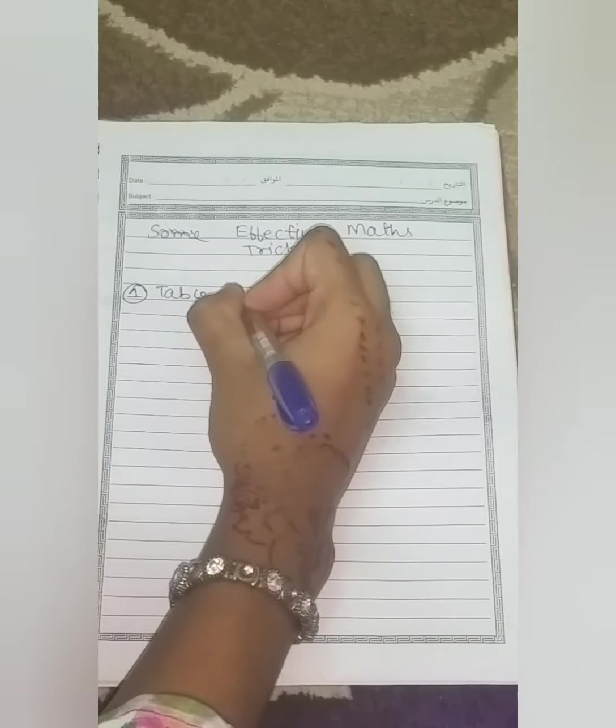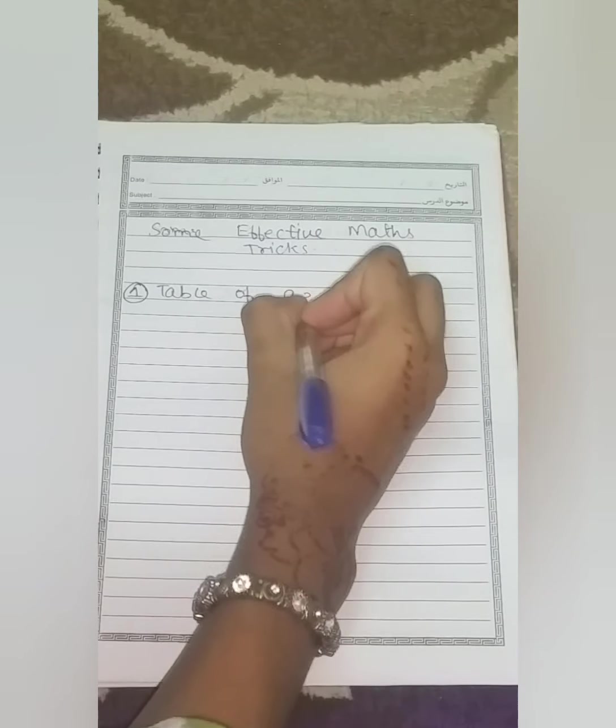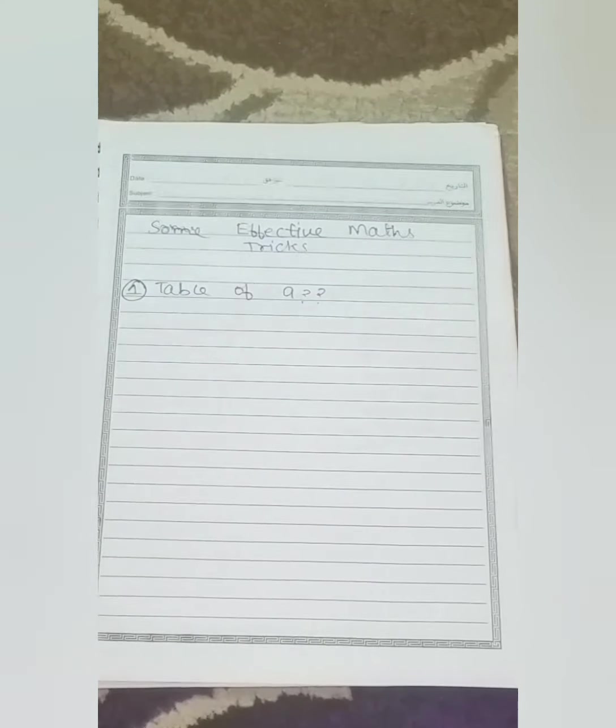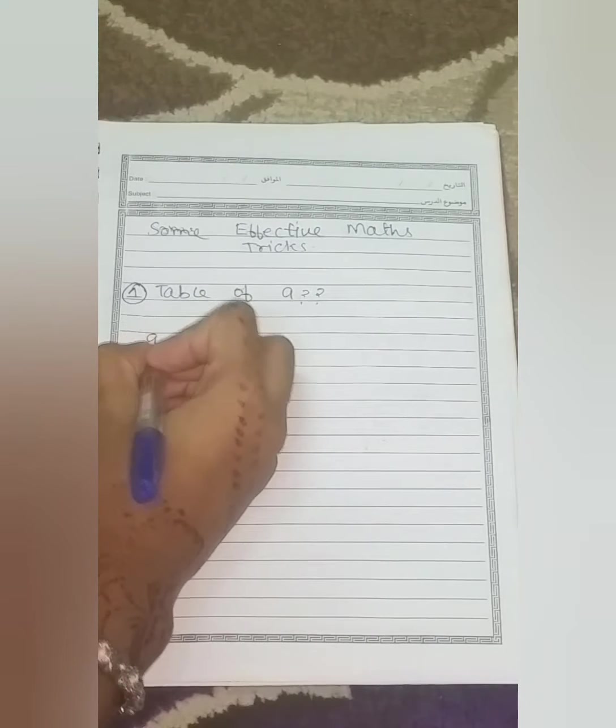So first of all, we will find the table. We will find a hack for the table of 9, so here we go. So what can be the hack for it? First of all, we will write the format of writing tables.